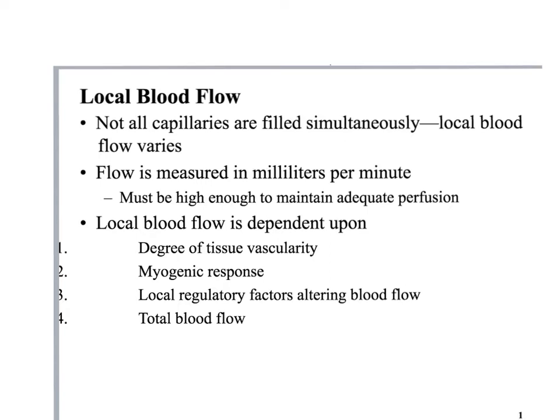The brain has lots of blood vessels. Skeletal muscle has lots of blood vessels. Compare that with tissues that don't have a lot: cartilage, ligaments, tendons — they don't have a lot of blood vessels. Because of that degree of vascularity, there's obviously a difference in the amount of blood that flows through those tissues.